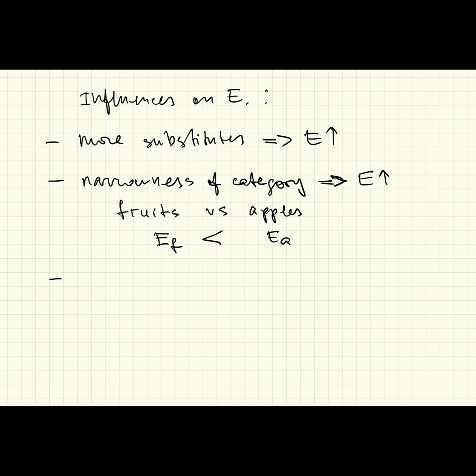Next thing is necessities versus luxuries. The more necessary something is, the more rigid we expect demand to be, so the lower we would expect elasticity for such a good to be. Something being a necessity makes its elasticity lower. Something being a luxury makes its elasticity higher.